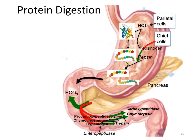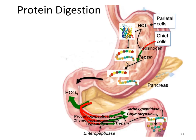Activated trypsin cleaves off the inhibitory peptides of trypsinogen, making more trypsin itself, as well as the inhibitory peptides of several other digestive enzymes — creating active chymotrypsin, carboxypeptidase, as well as others not shown here. These activated proteases cleave the dietary polypeptides into single amino acids, dipeptides, as well as some small oligopeptides.